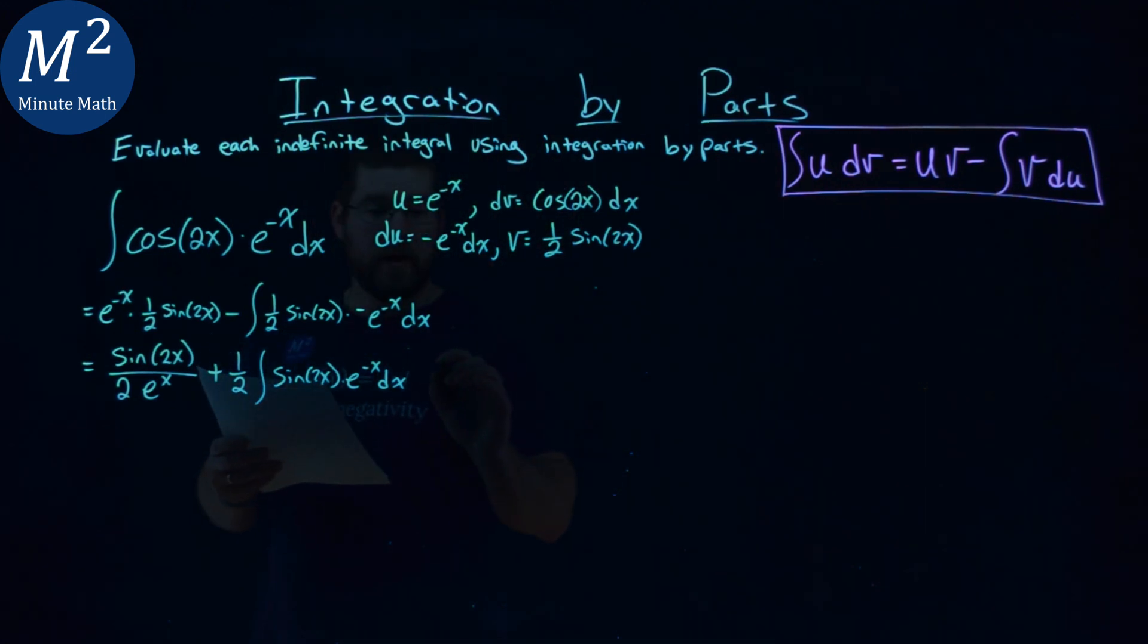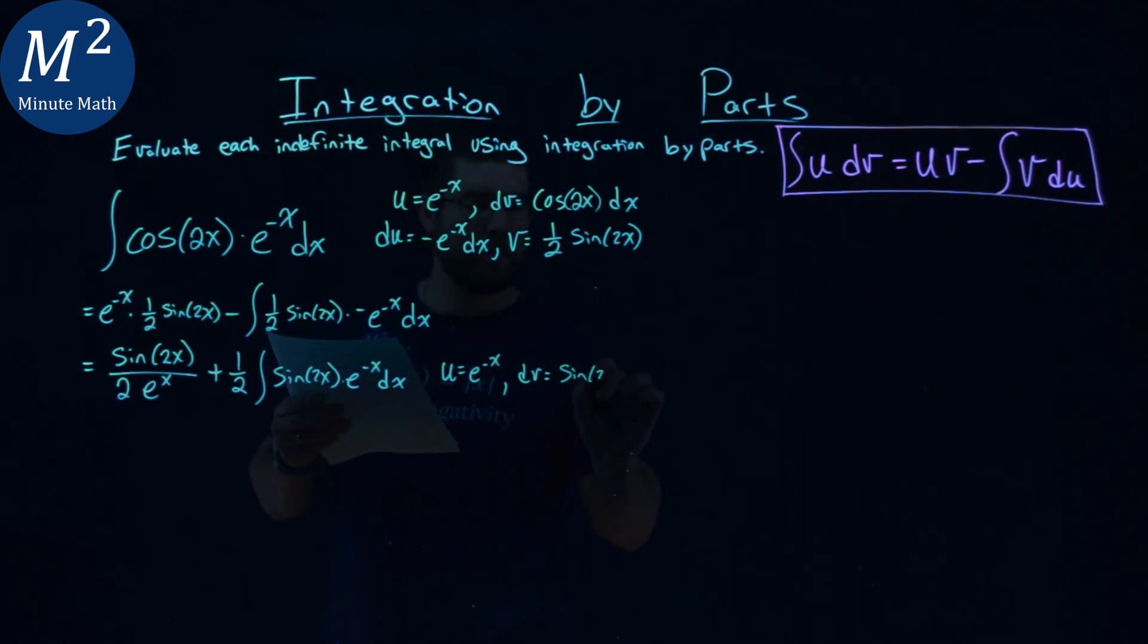So we have a u value here. Let's set it again to be that e to the negative x. And we're going to set our dv value here to equal our sine of 2x dx.